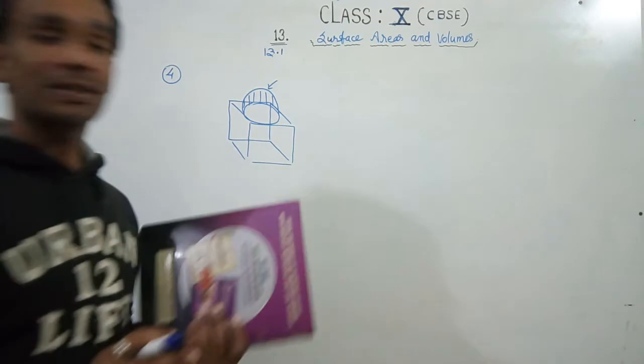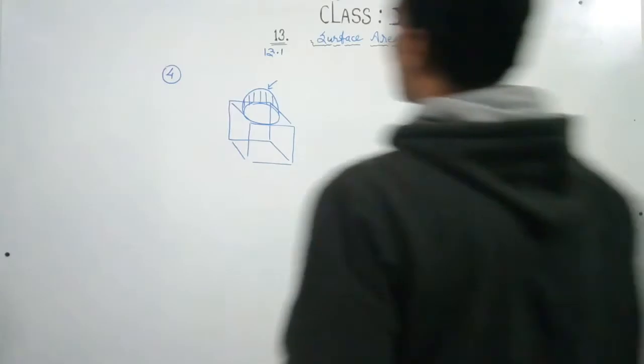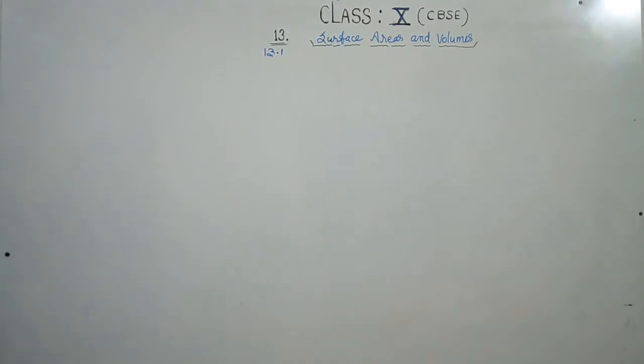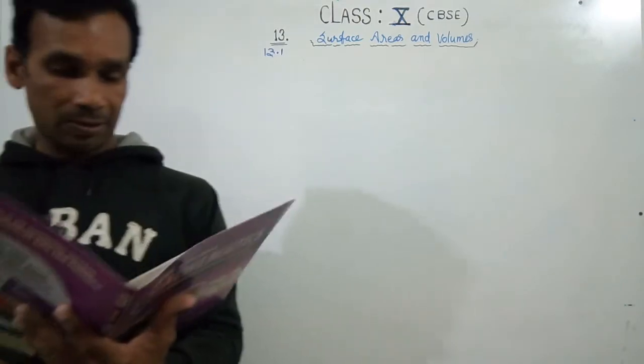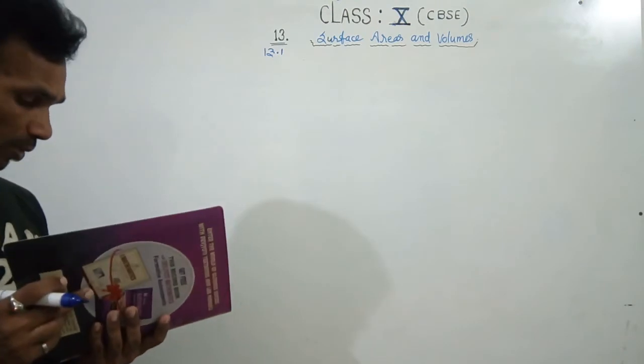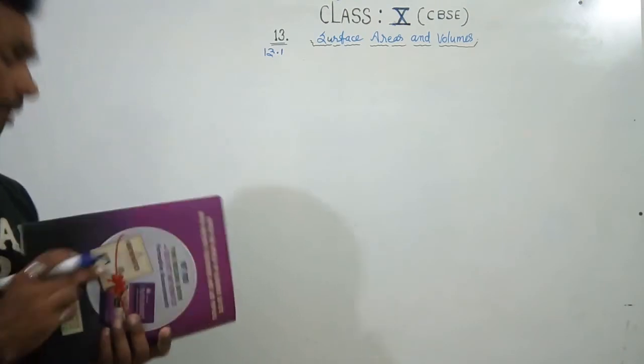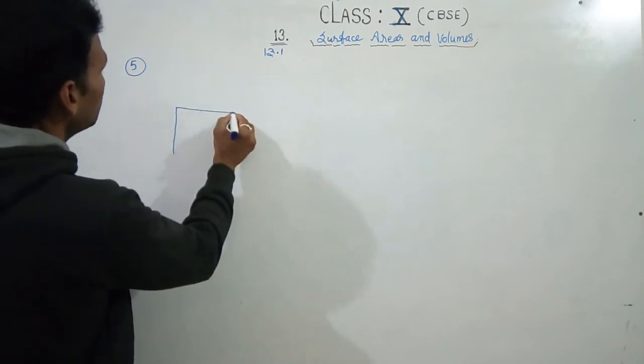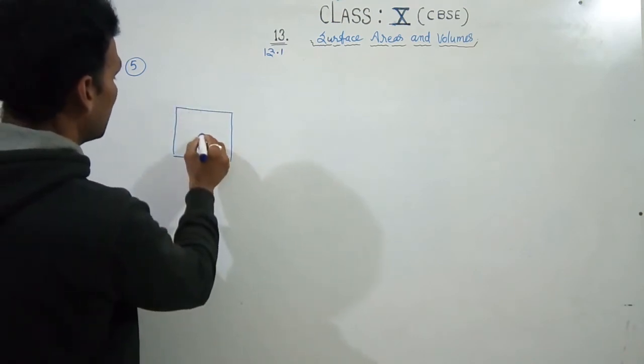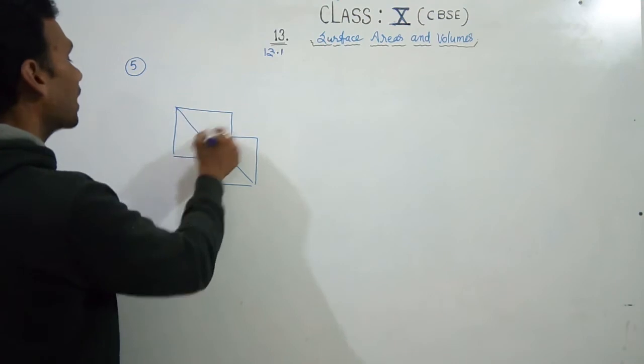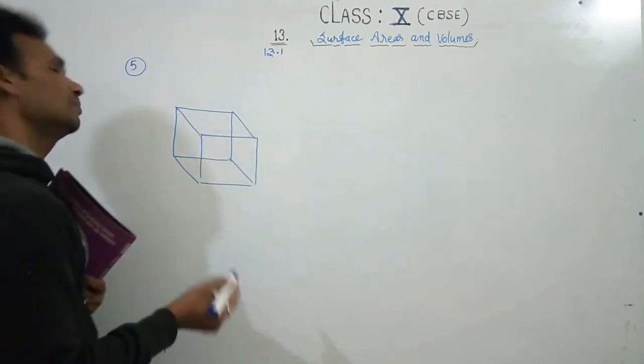Now we will take Exercise 13.1, Question Number 5. Question 4 and 5 are the same question, clear? Question 5: A hemispherical depression is cut out from one face of a cubical wooden block such that its diameter... So we made this cubical wooden block, this type of figure.